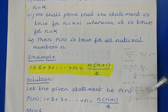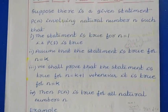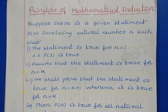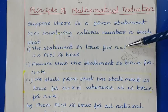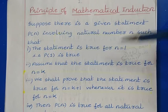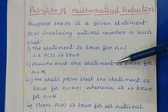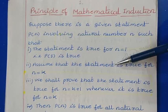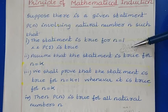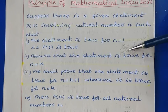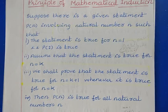In the principle of mathematical induction, instead of checking the statement for many values, we check it for some specific values. In the first step, we check the statement for n equal to 1. If it is true for n equal to 1, we proceed to the second step, where we assume the statement is true for some positive integer k. In the third step, using the assumption for n equal to k, we try to prove the statement is true for n equal to k plus 1. If we succeed, we can say the entire mathematical statement is true for all values of n.